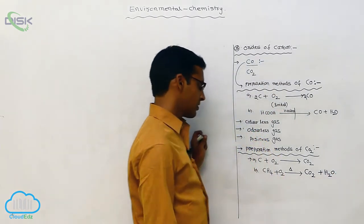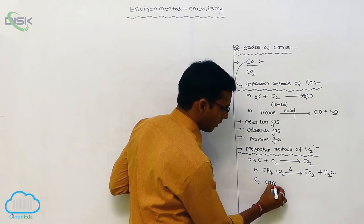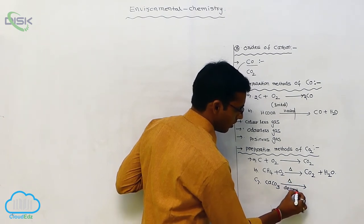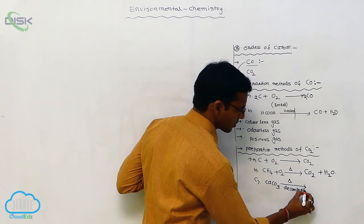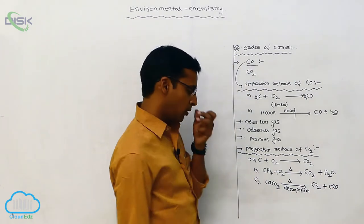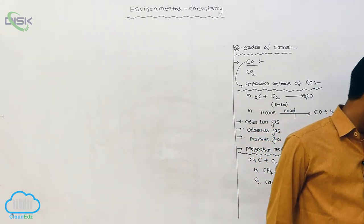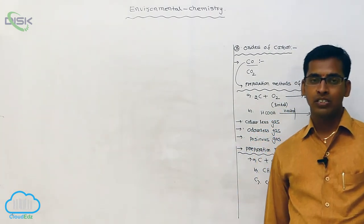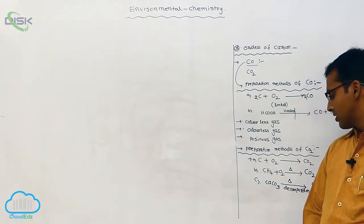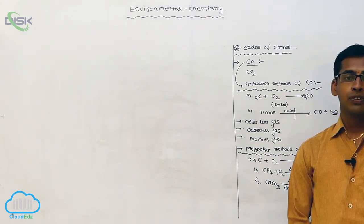Next, limestone — meaning calcium carbonate — undergoes decomposition to produce carbon dioxide and calcium oxide. Here, calcium oxide acts as a basic compound and carbon dioxide acts as an acidic compound. So these are the preparation methods of carbon dioxide: from carbon (a non-metal), hydrocarbons, and decomposition of limestone.